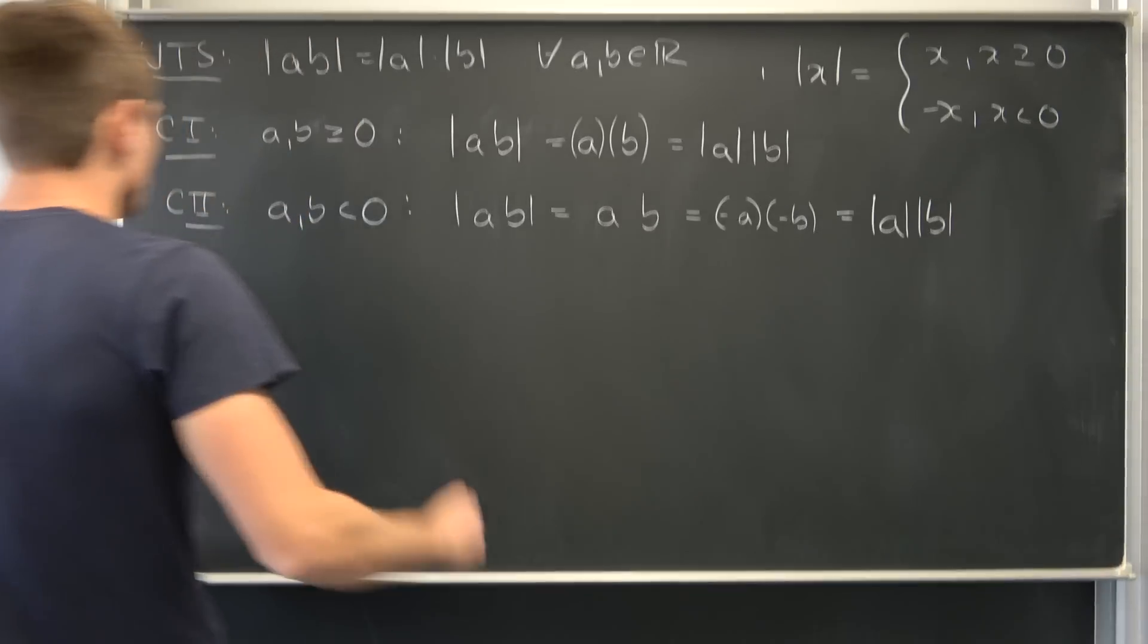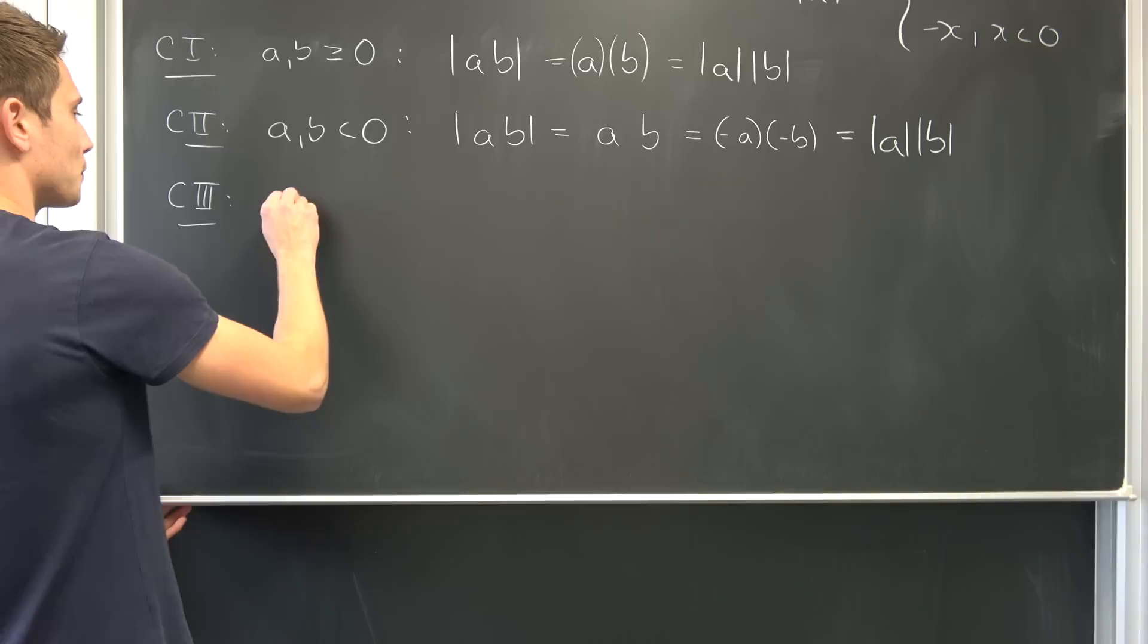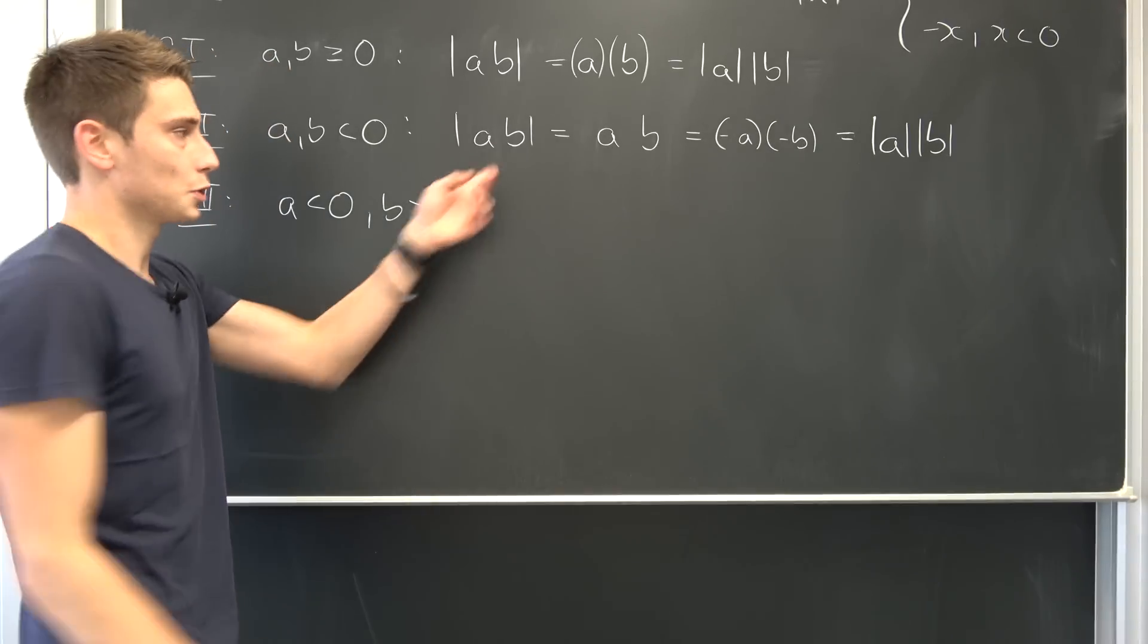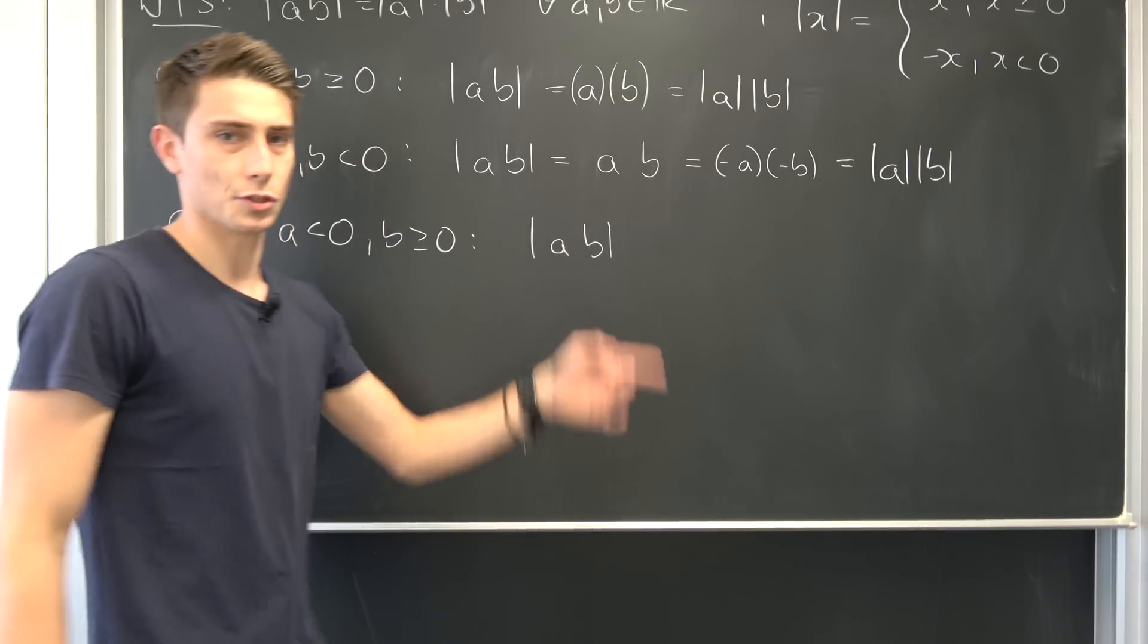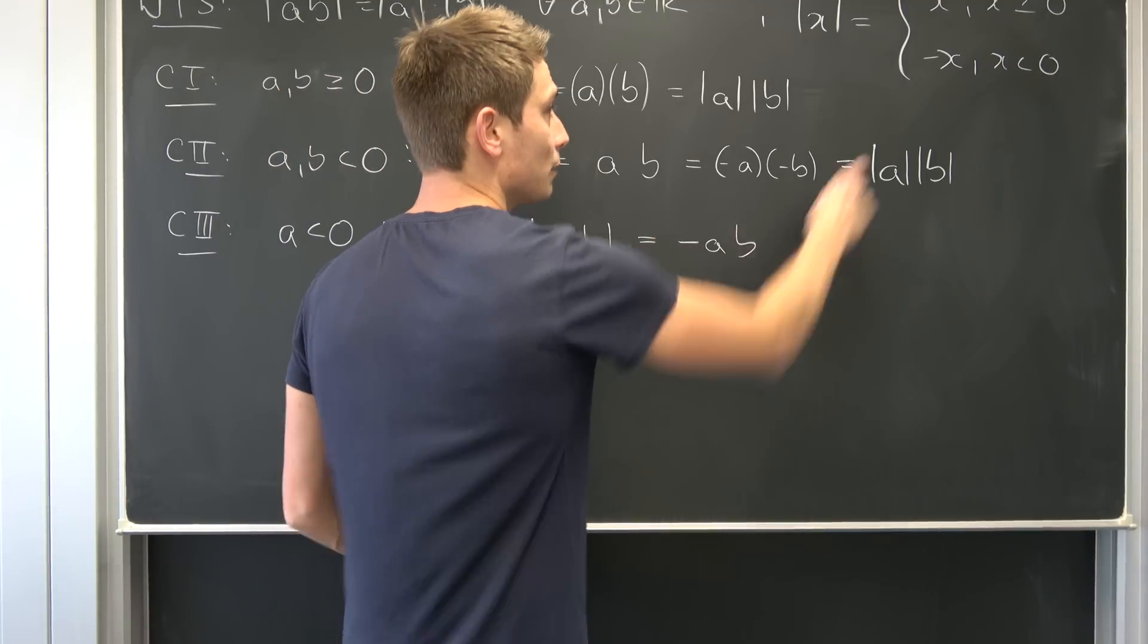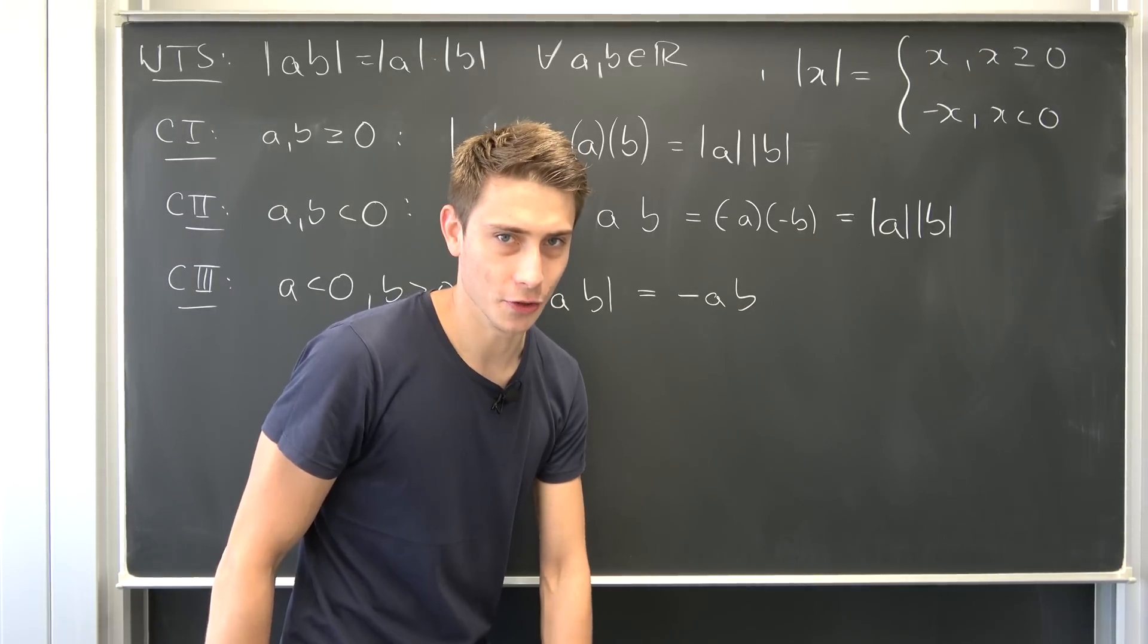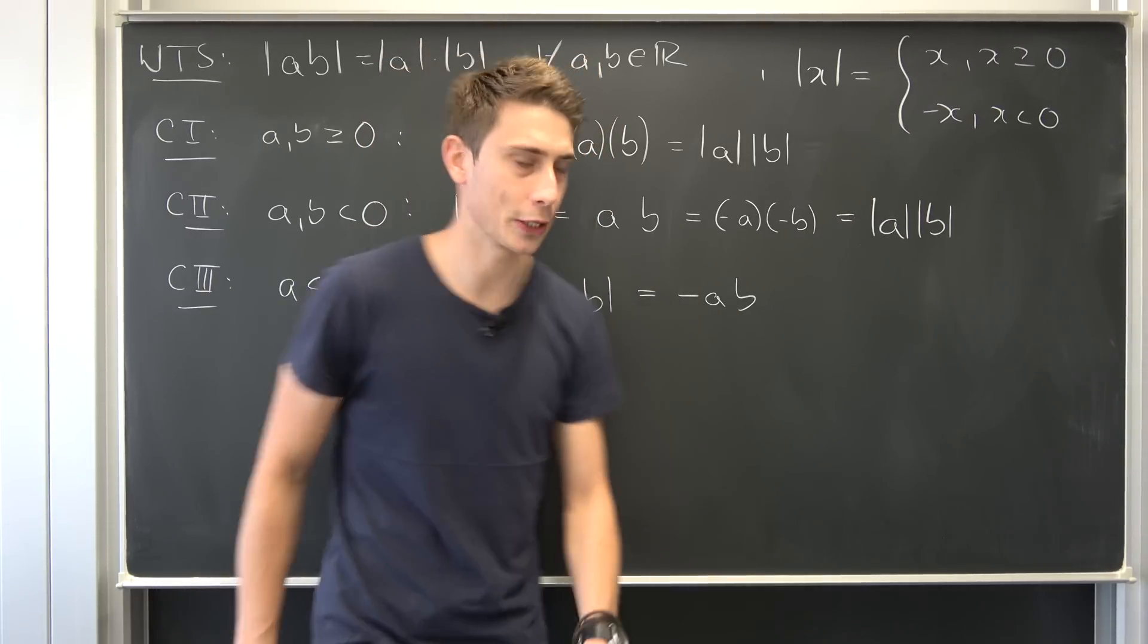And now, for the last case, the one without loss of generality, case 3, A is less than zero, B is greater or equal than zero. What is going to happen for this right here? A times B. Well, negative times positive is going to be negative. So, we have negative A times B by this definition. Timo just came in. I'm terribly sorry about this video. Such a good run. I'm not going to re-record it. Let's continue.